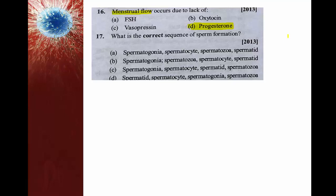What is the correct sequence of sperm formation? The right answer is option C: spermatogonia (diploid) → primary spermatocytes → secondary spermatocytes (haploid) → spermatids (haploid) → finally they produce the male gamete called spermatozoa or sperms.